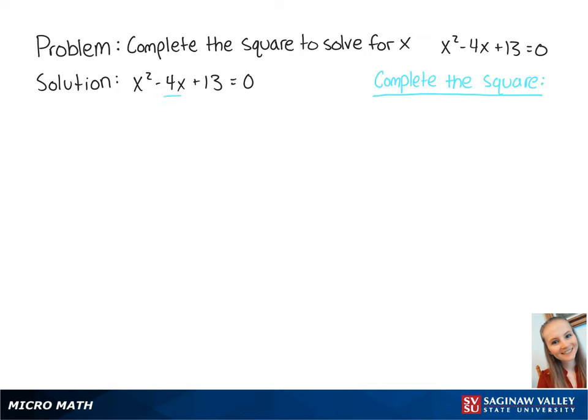To complete the square, we take the coefficient of x and multiply it by one half. So we get negative 4 times one half equals negative 2. Then we take negative 2 and square it.